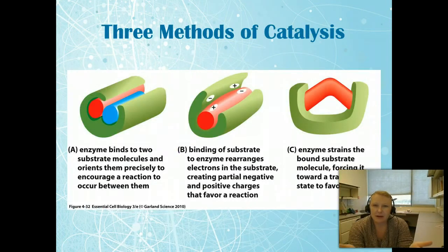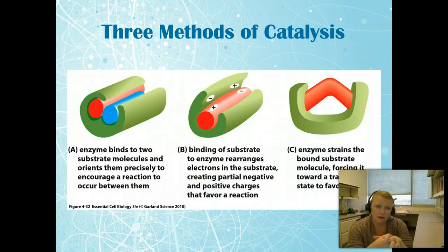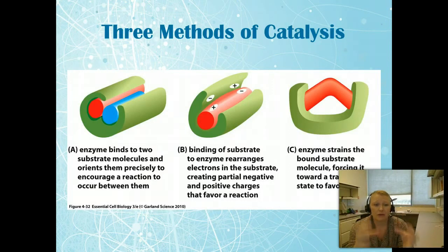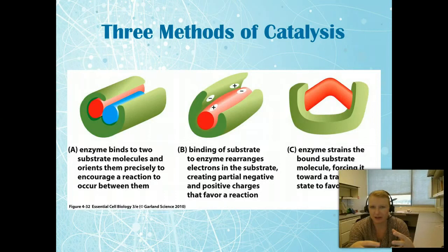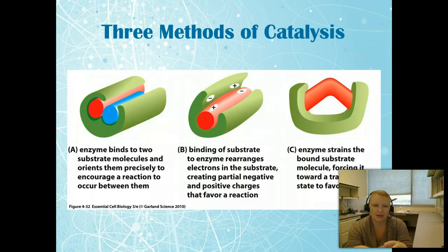But it's more than just breaking bonds — enzymes do a lot of other things. There are three common methods of catalysis: first, they put two molecules together that wouldn't normally go together; second, they rearrange the electrons on the substrate, which creates a different reaction outcome; and third, they strain those bonds to help break them. So those three things are: put two together, rearrange within the substrate, and strain the bonds so they break.